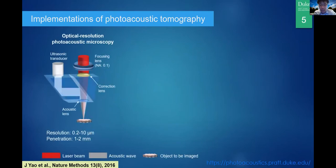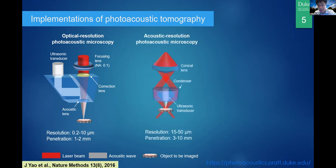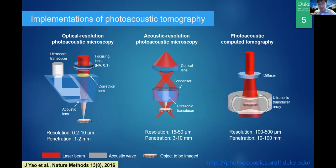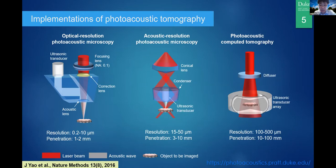There are different ways to do photoacoustic imaging. We can do a high-resolution version — photoacoustic microscopy — with micrometer resolution and millimeter penetration. Or we can use acoustic resolution only, with higher-frequency ultrasound detection, achieving tens of micrometer resolution with millimeter to centimeter penetration. With diffuse photons, ultrasound is the only part determining the resolution, enabling penetration depths of a few centimeters to 10 centimeters. Photoacoustic imaging is highly scalable depending on resolution and penetration depth needs.